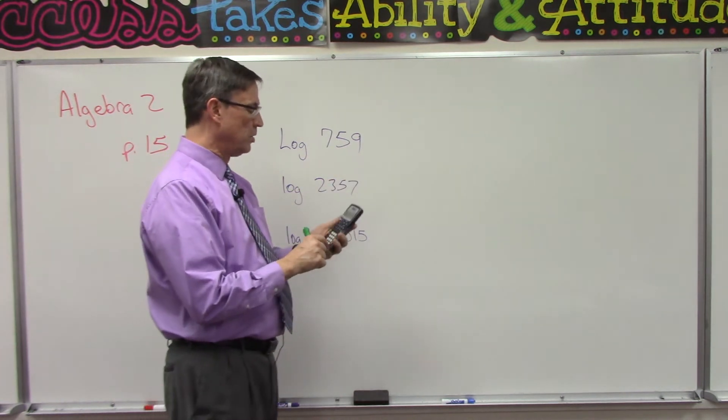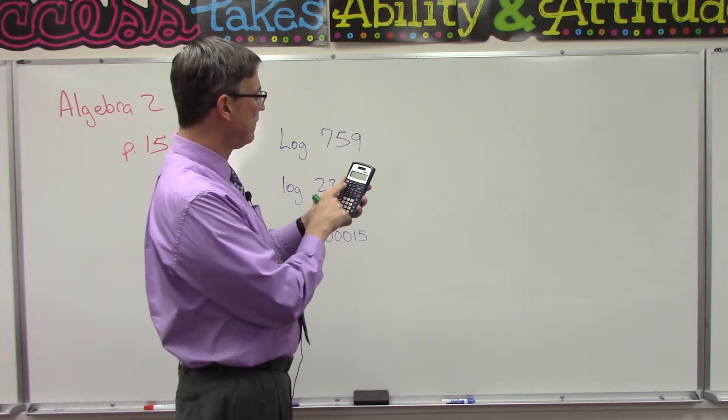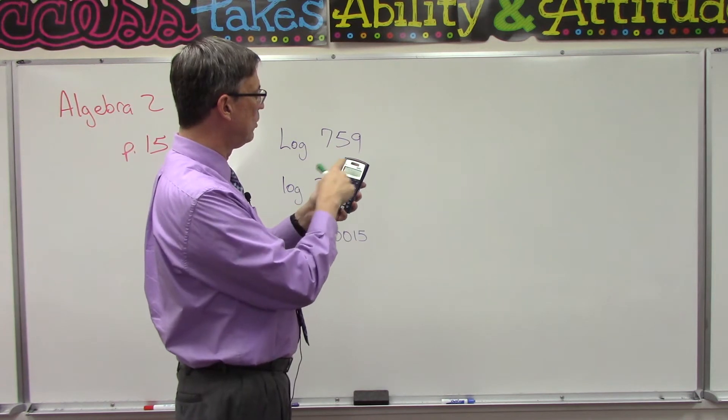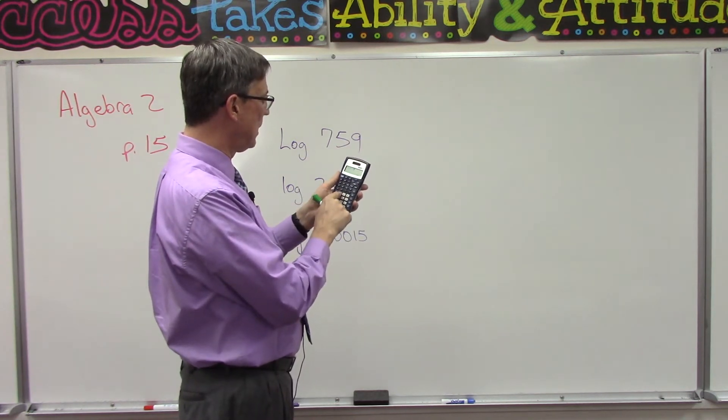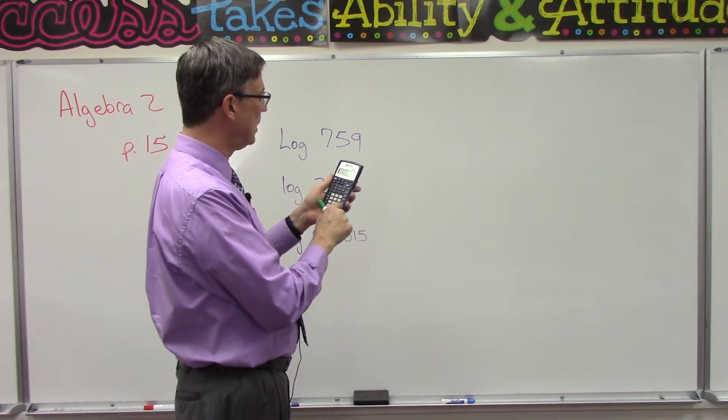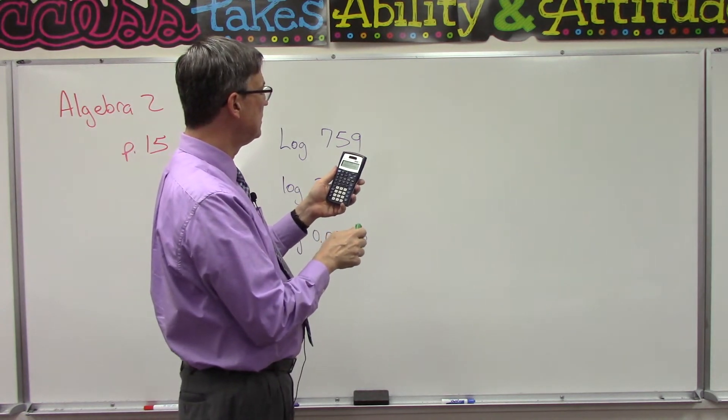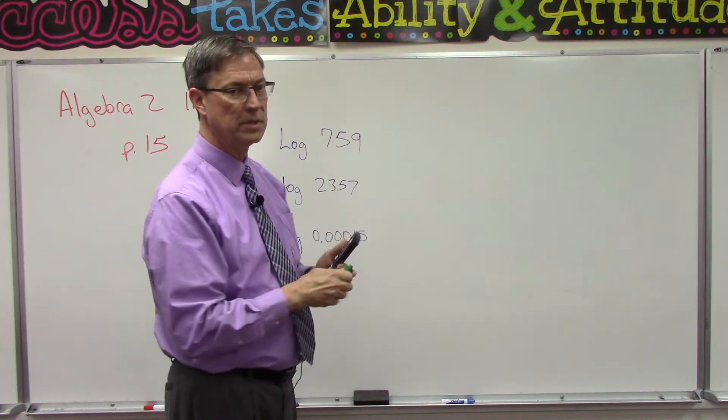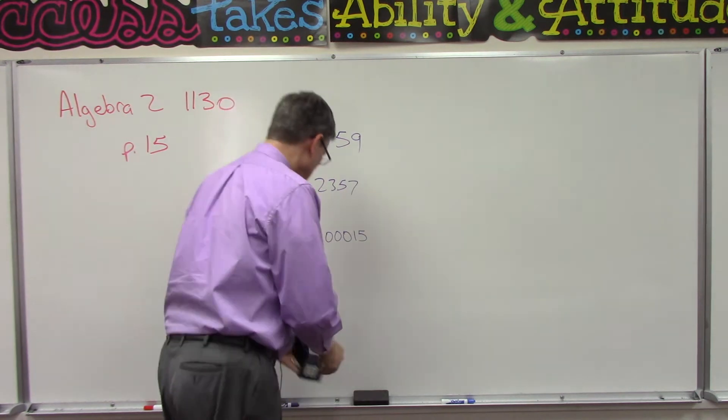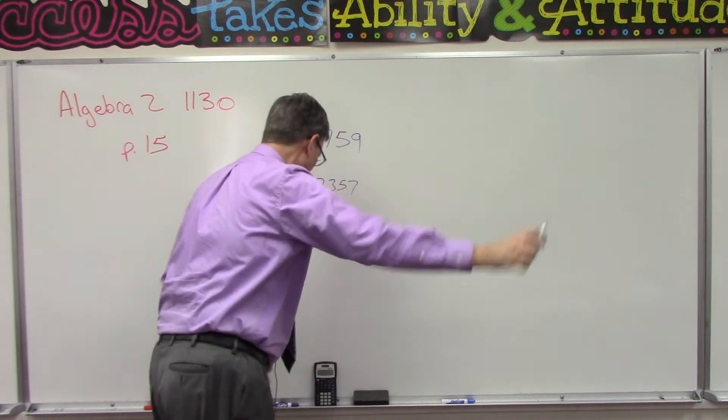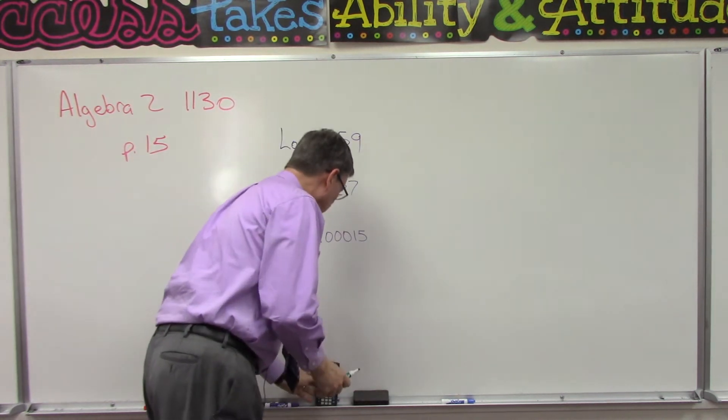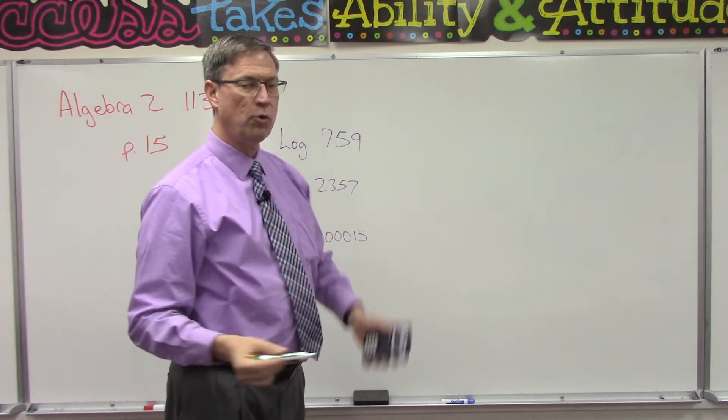So on my calculator, I first hit log, and then a parenthesis pops up, and then I plug in 759, hit enter, and I get 2.880241776.